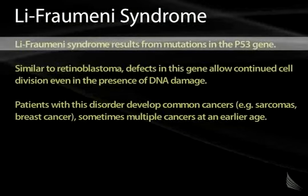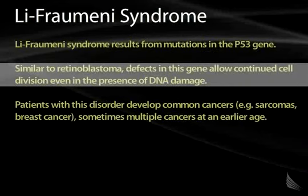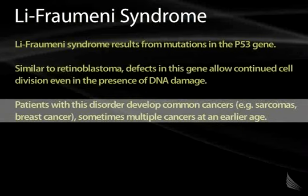There can also be mutations in the P53 gene, leading to an inherited cancer syndrome called Li-Fraumeni syndrome. Similar to retinoblastoma, defects in this gene allow continued cell division even in the presence of DNA damage — a defect in the G1 to S phase checkpoint. Patients develop many different types of cancers including soft tissue sarcomas and breast cancer, often developing multiple cancer types at an earlier age than typical. This concludes the section on DNA repair.